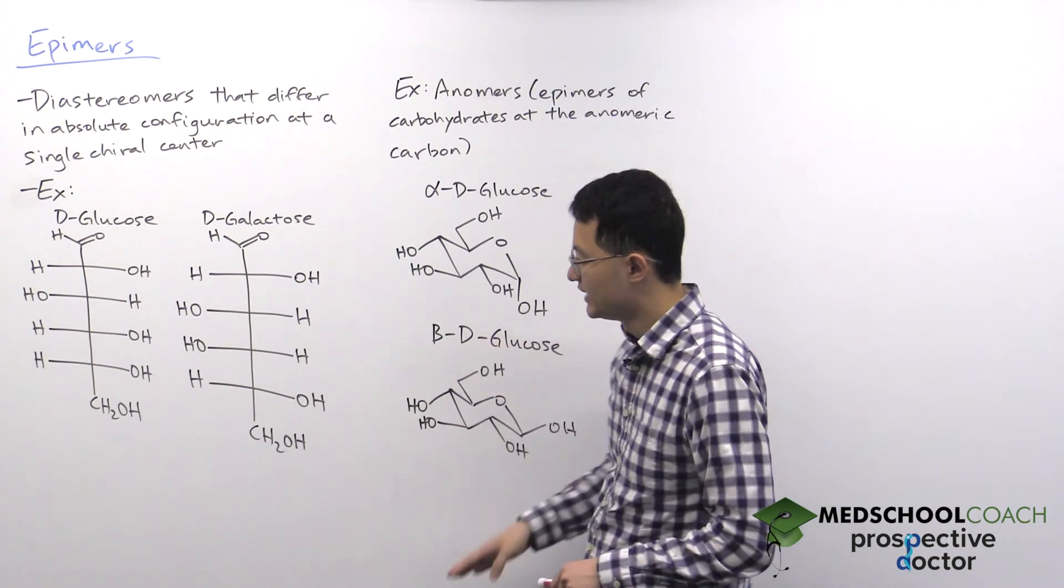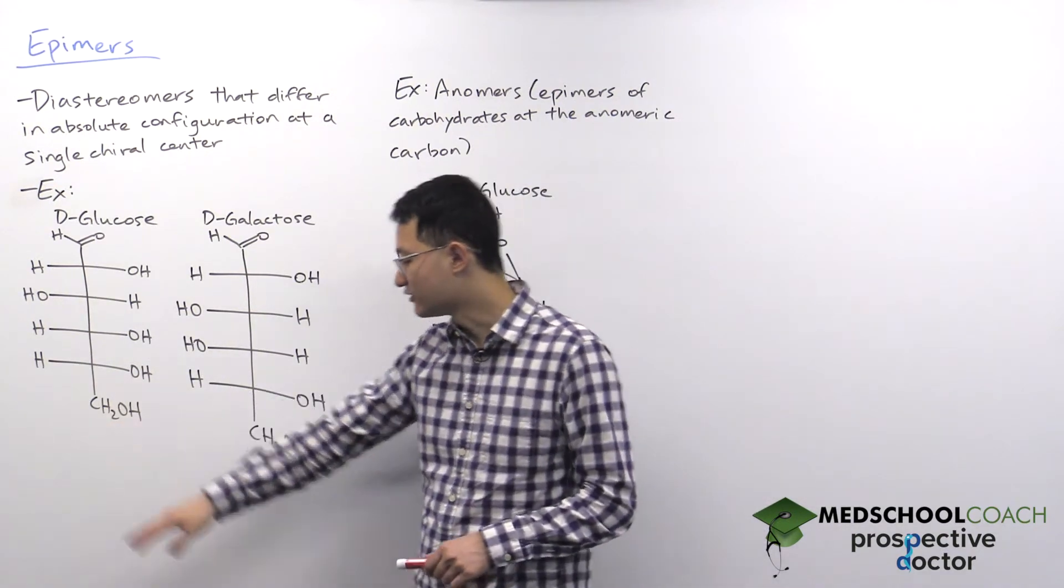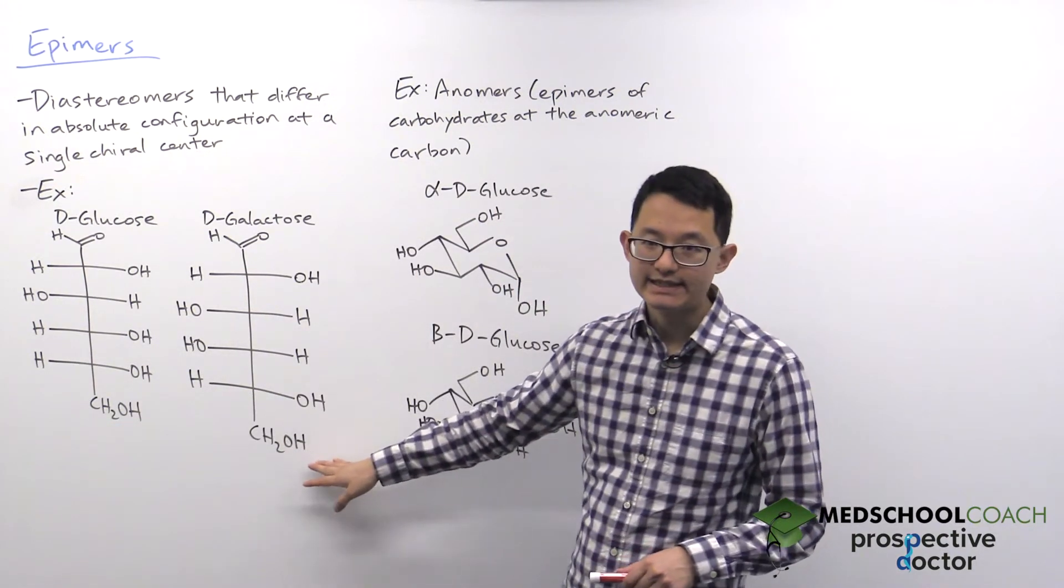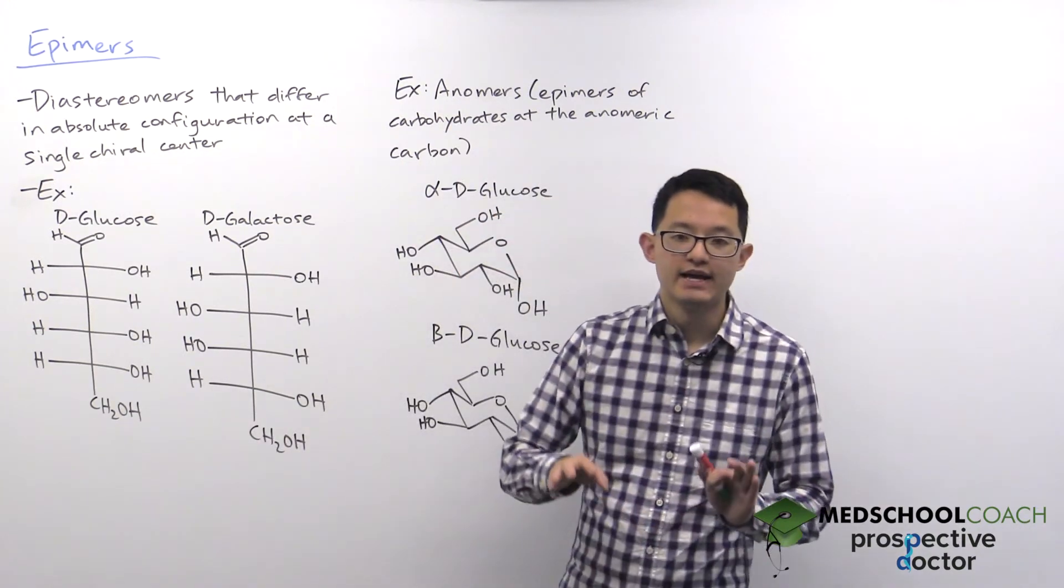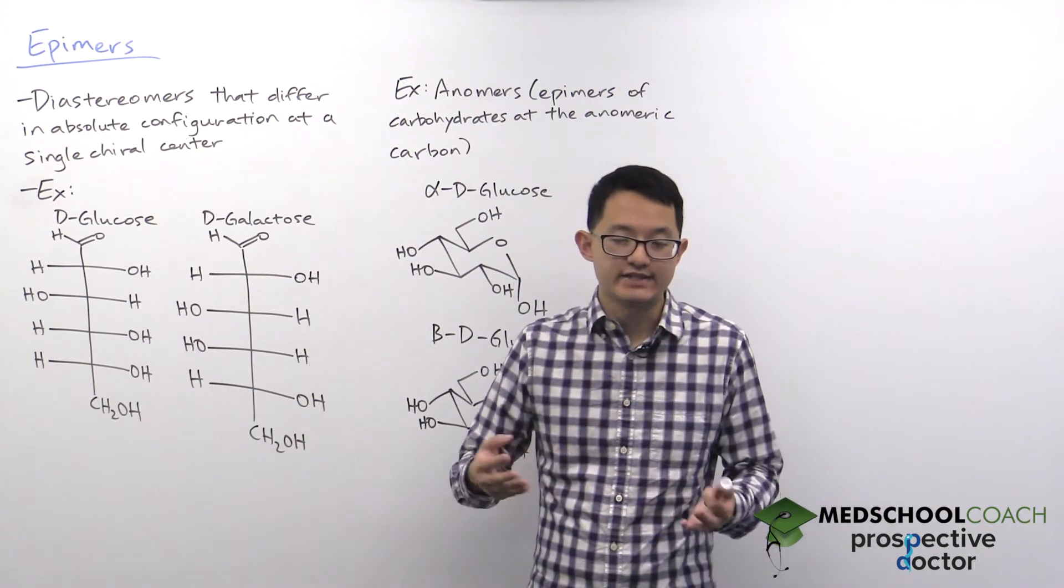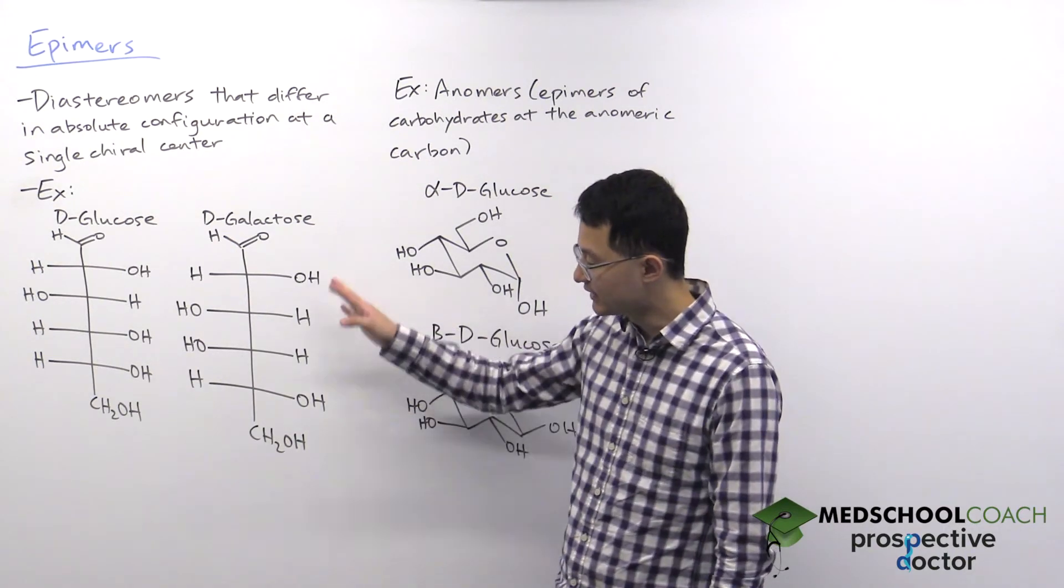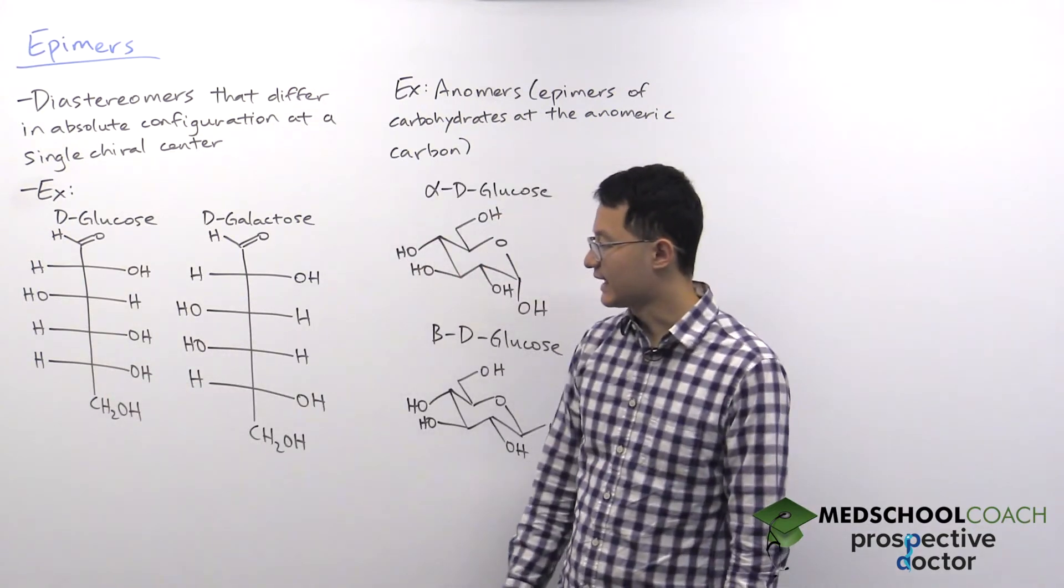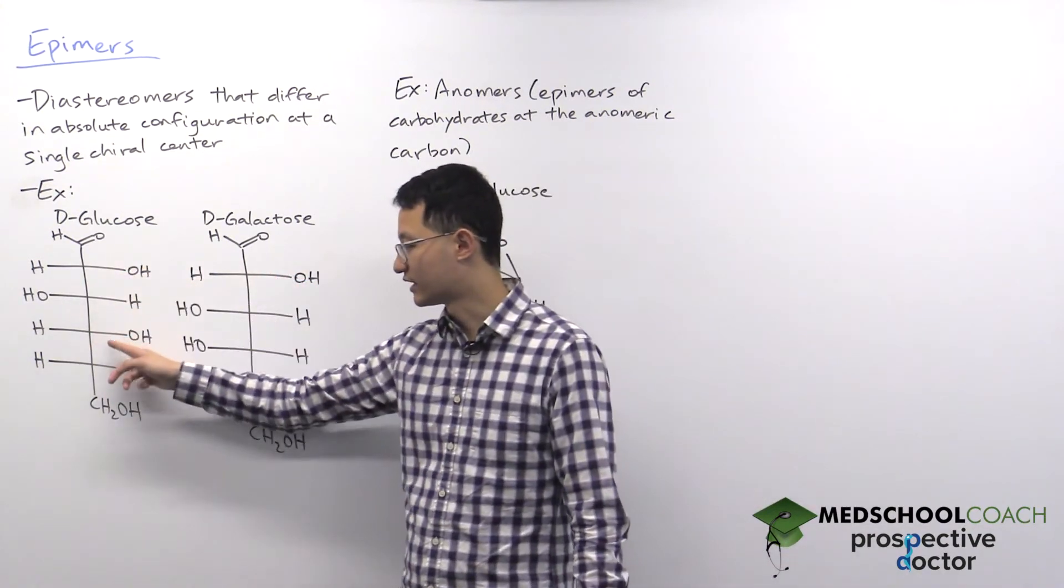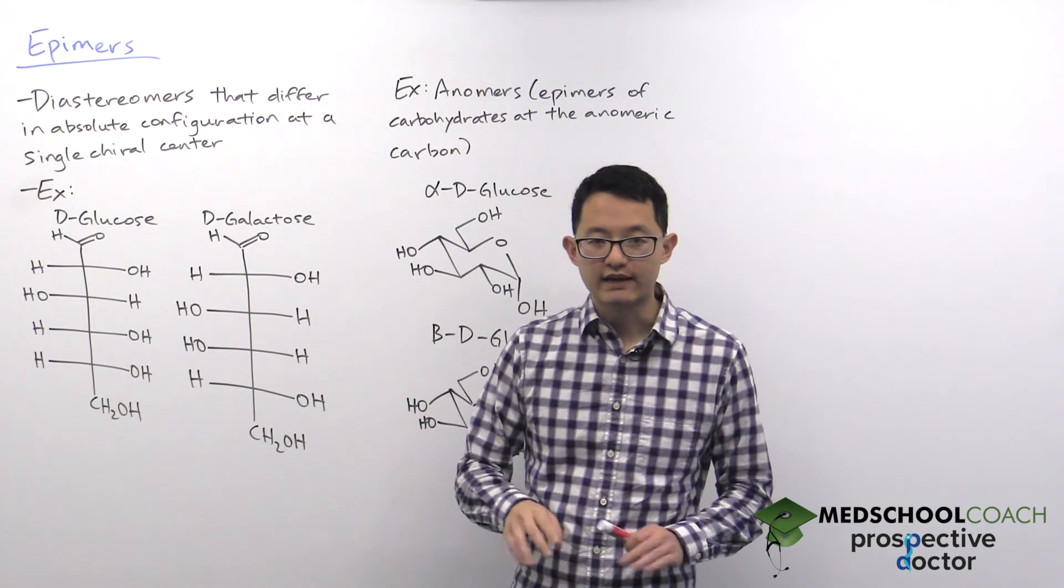We've got a couple examples here. The first example is D-glucose versus D-galactose. If you look at these two molecules, they have the same molecular formula C6H12O6, and if you look at the chiral centers, there's four of them and you're going to see that they have the same absolute configuration at three of the chiral centers.